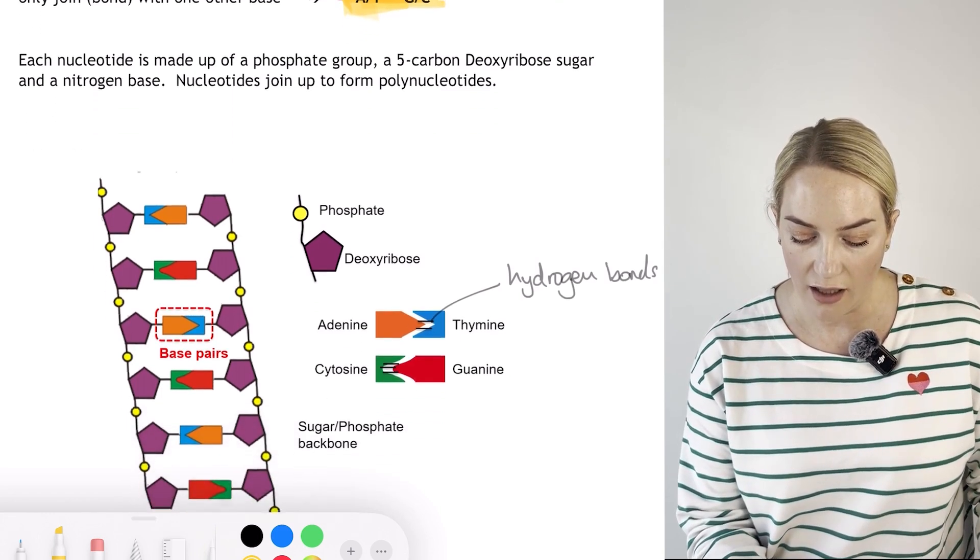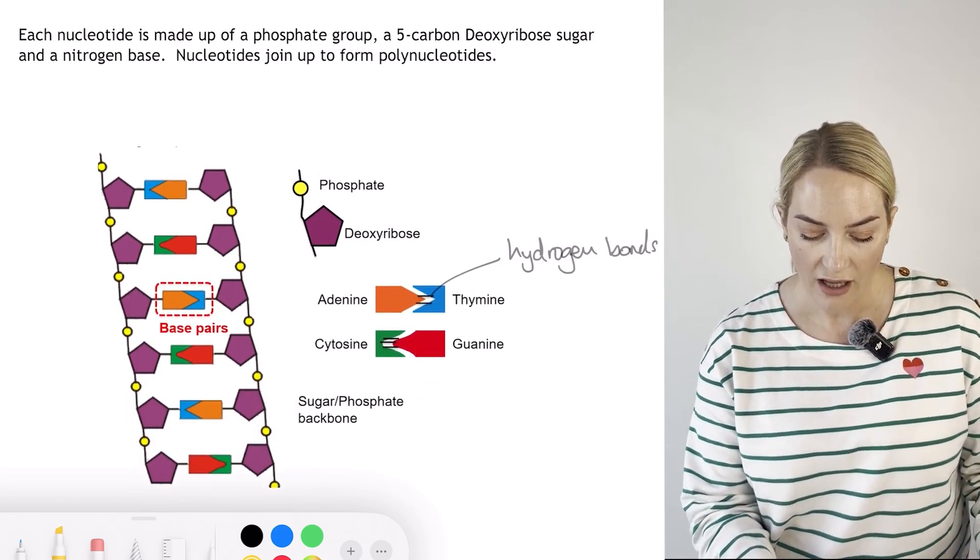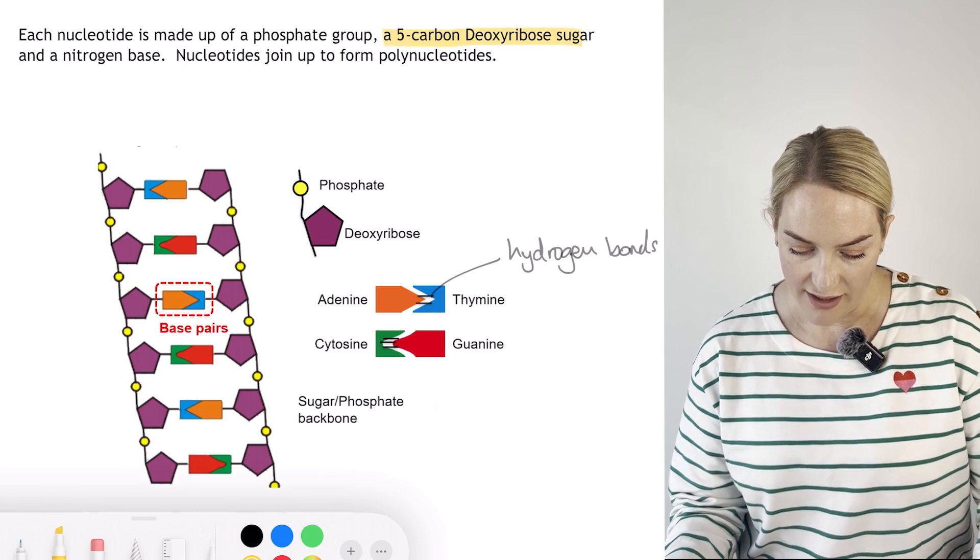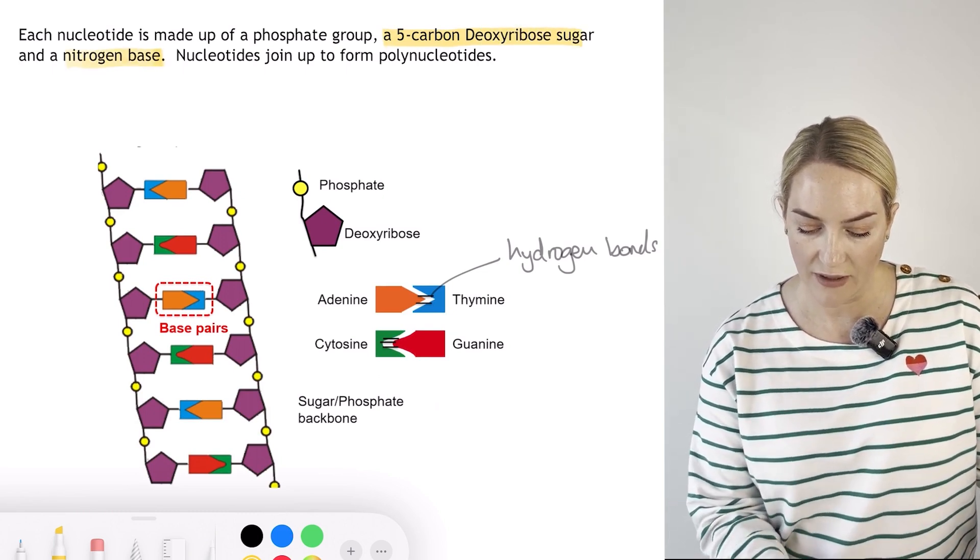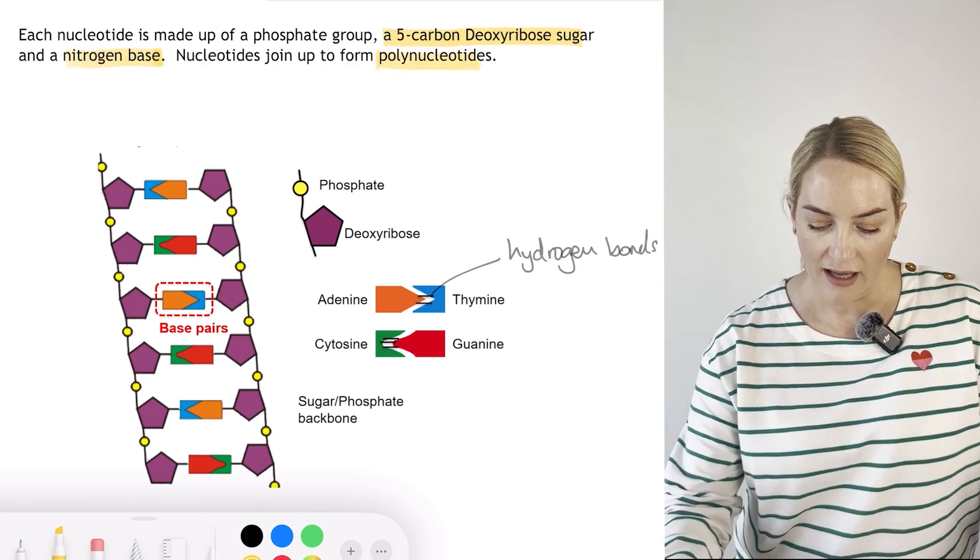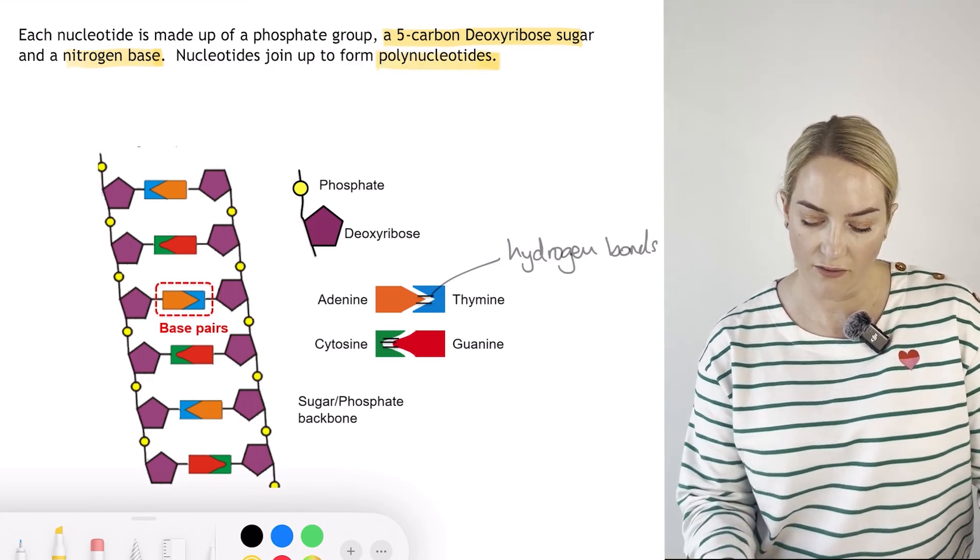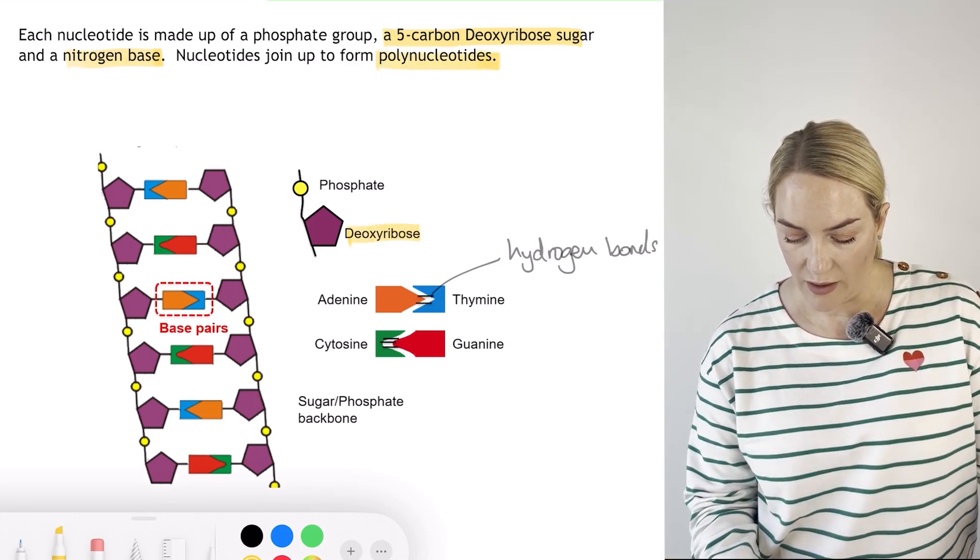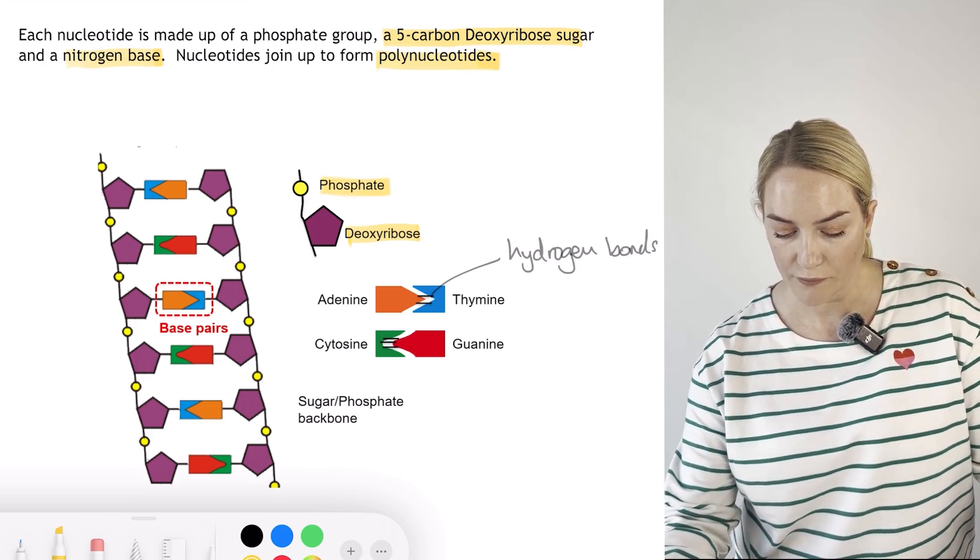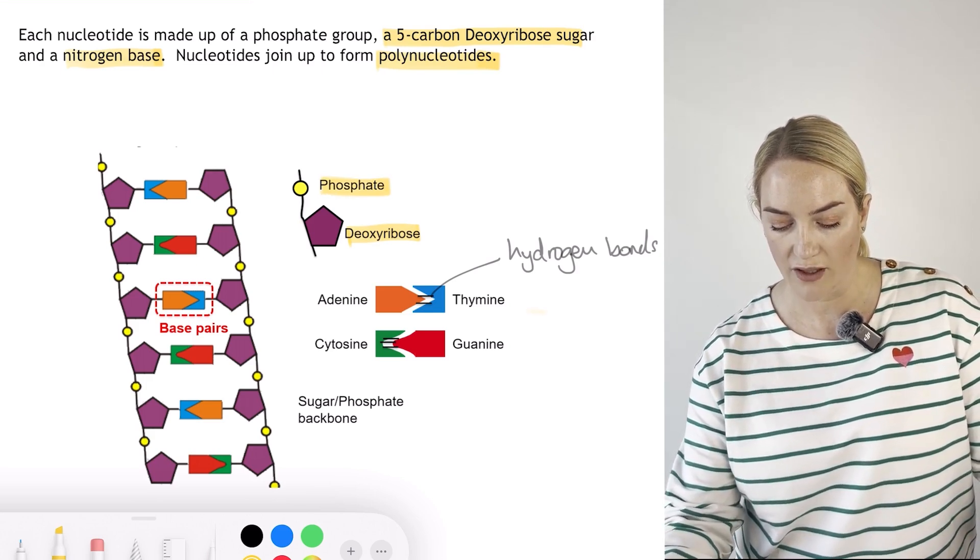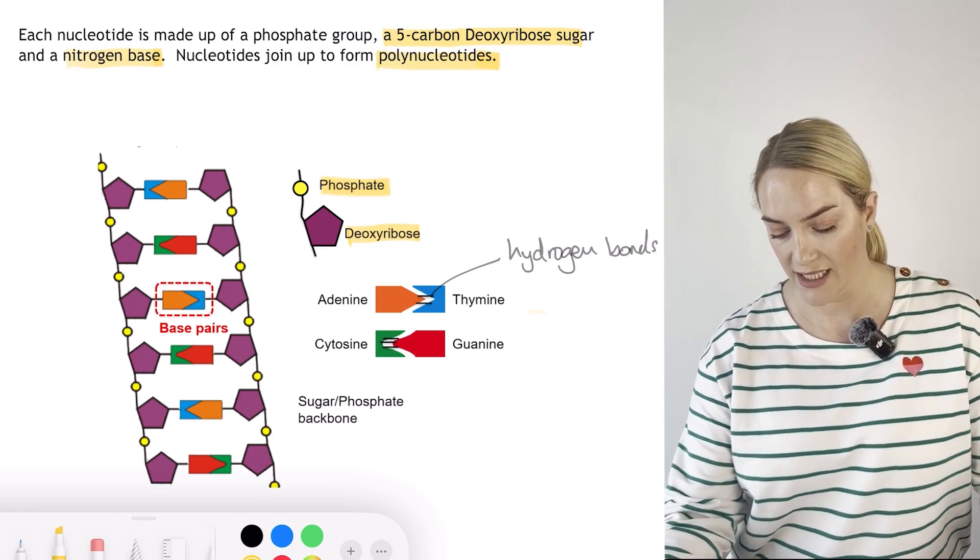Each nucleotide is made of a phosphate group which contains a five-carbon deoxyribose sugar and a nitrogen base. Many nucleotides together form polynucleotides. Here we have our deoxyribose sugar, our phosphate, and branching off is one of our bases - adenine and thymine, cytosine or guanine.